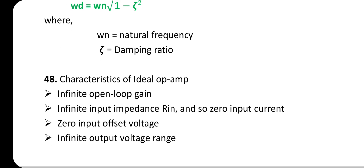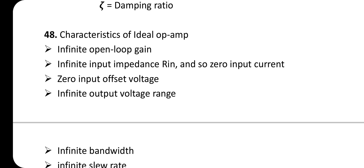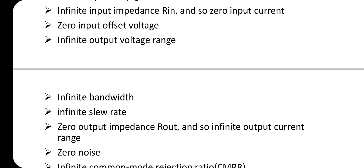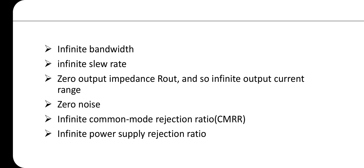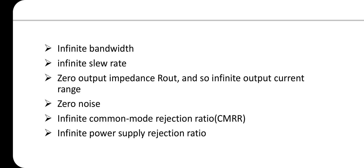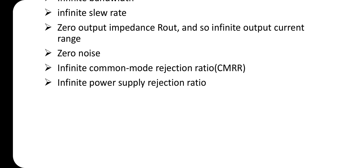Characteristics of an ideal op-amp: infinite open-loop gain, infinite input impedance, zero input current (no current into op-amp), zero input offset voltage, infinite output voltage range, infinite bandwidth, infinite slew rate, zero output impedance, infinite output current range, zero noise, infinite common mode rejection ratio (CMRR), and infinite power supply rejection ratio (PSRR).